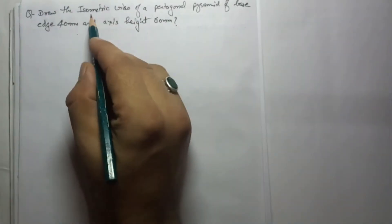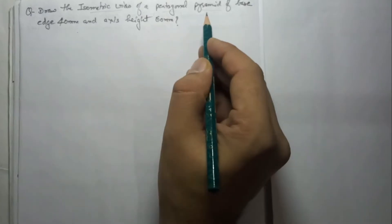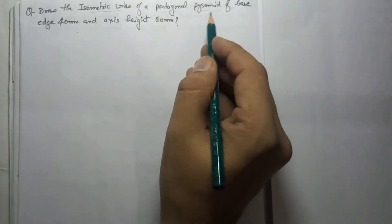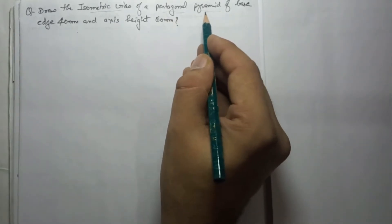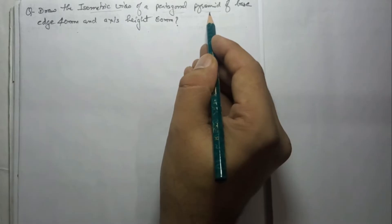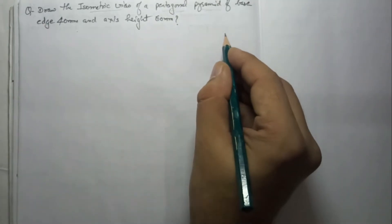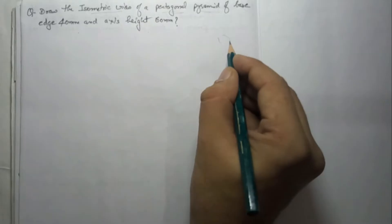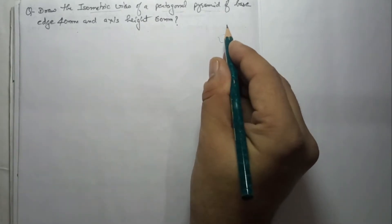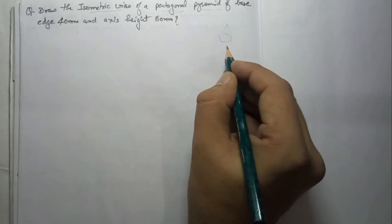We will solve one more question: the isometric view of a pentagonal pyramid. A pentagonal pyramid means the base will be a pentagon and the top will be a corner point. The base has the shape of a pentagon, and at the top a single corner point is there — this is the shape.